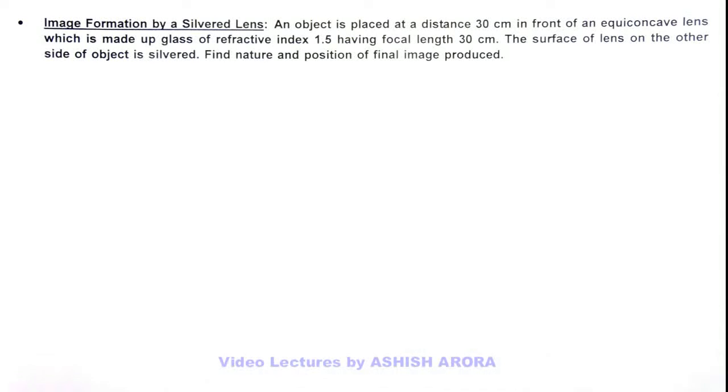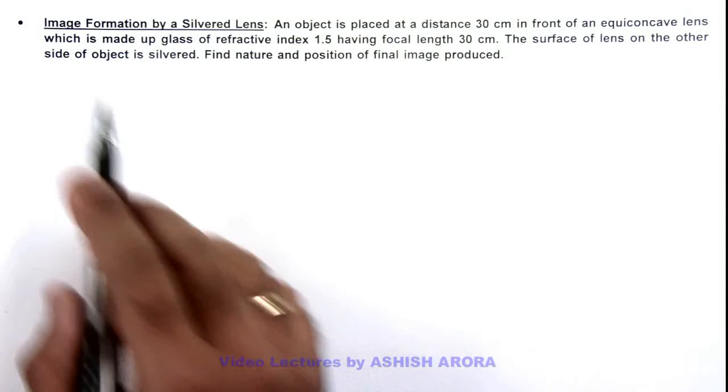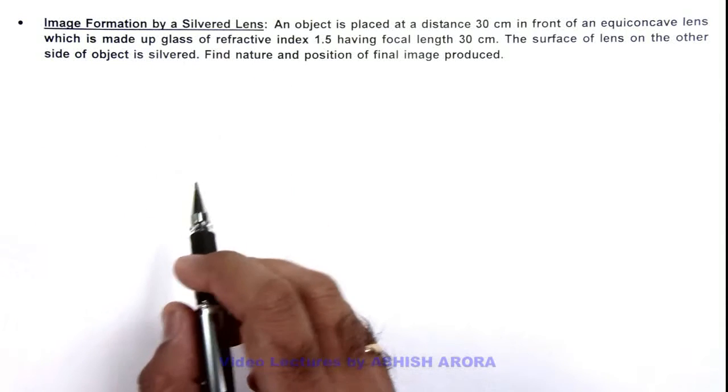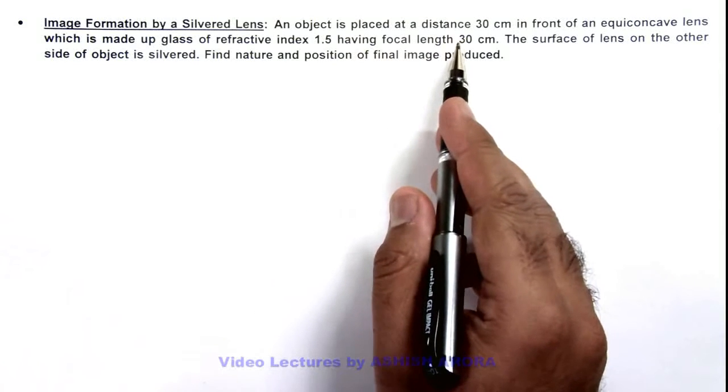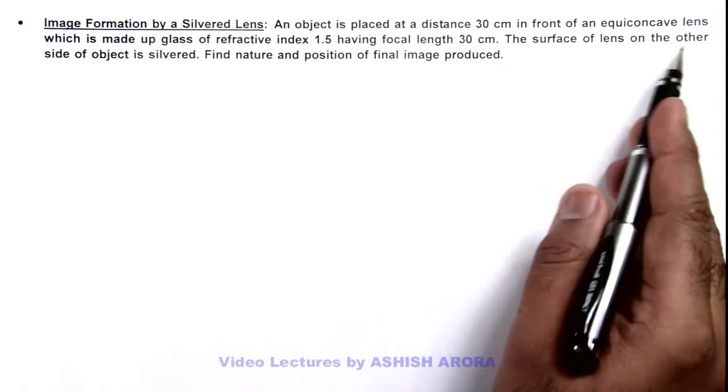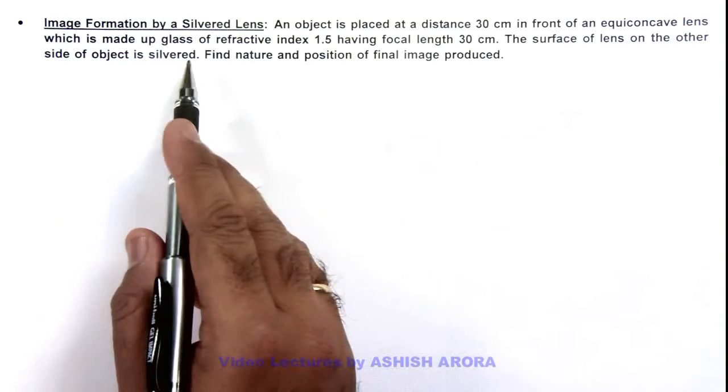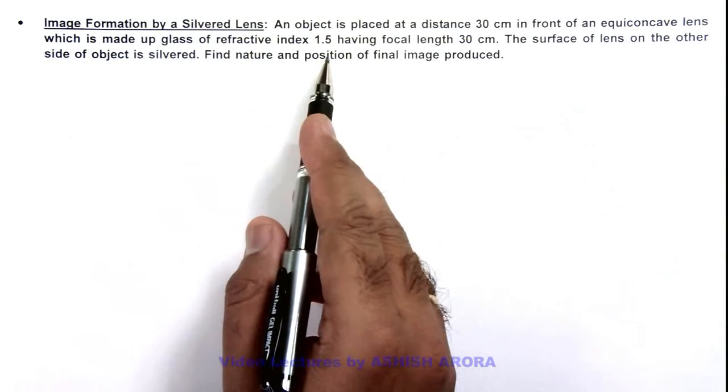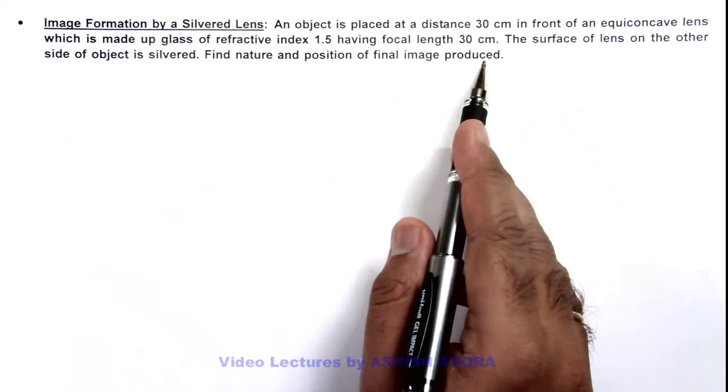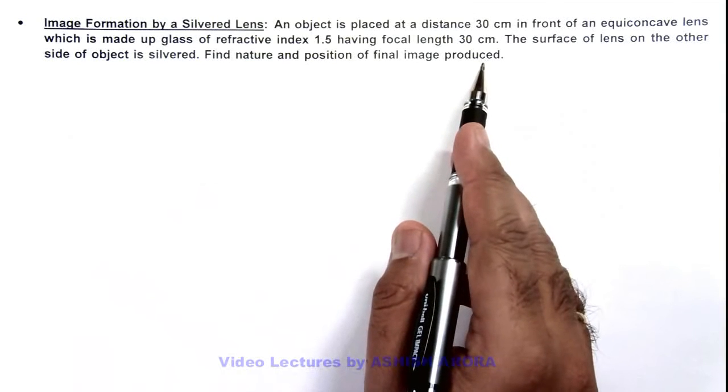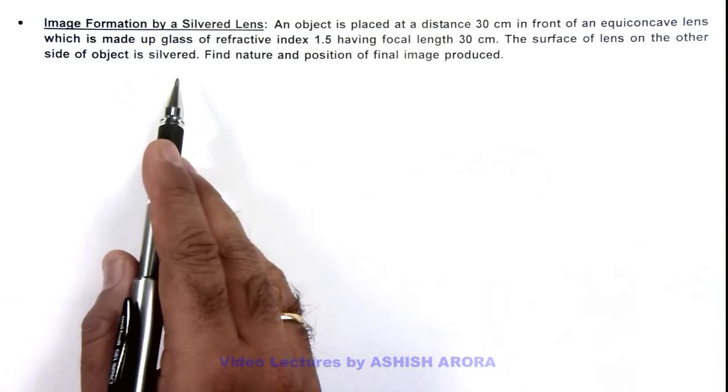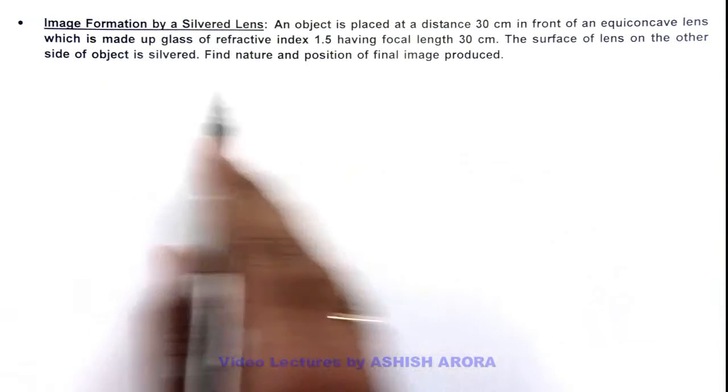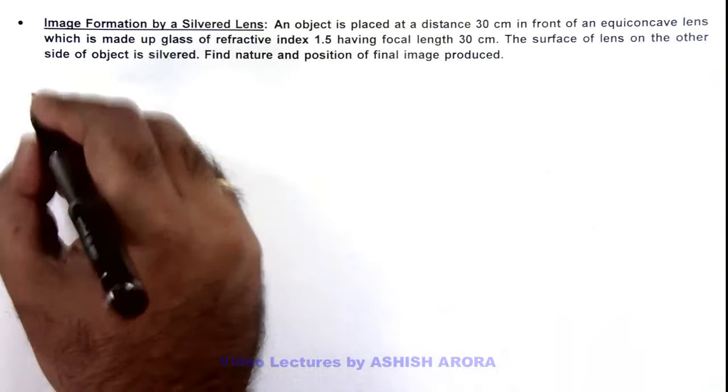In this illustration, we'll analyze the image formation by a silvered lens. We are given that an object is placed at a distance 30 centimeter in front of an equi-concave lens which is made up of glass of refractive index 1.5 and having focal length 30 centimeter. We are also given that the surface of lens on the other side of object is silvered, and we are required to find the nature and position of final image produced.